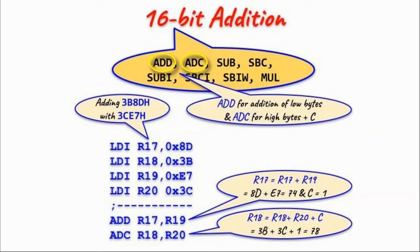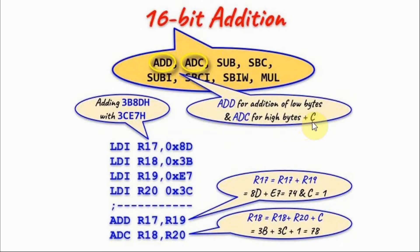We begin with 16-bit addition, which can be achieved using the ADD and the ADD with carry opcodes. ADD is used to add the low bytes of the two 16-bit numbers, and ADD with carry is used to add the high bytes of the numbers plus the value of the carry flag.